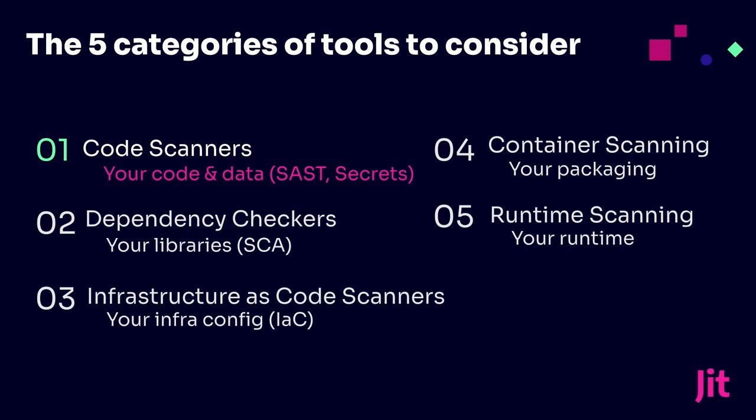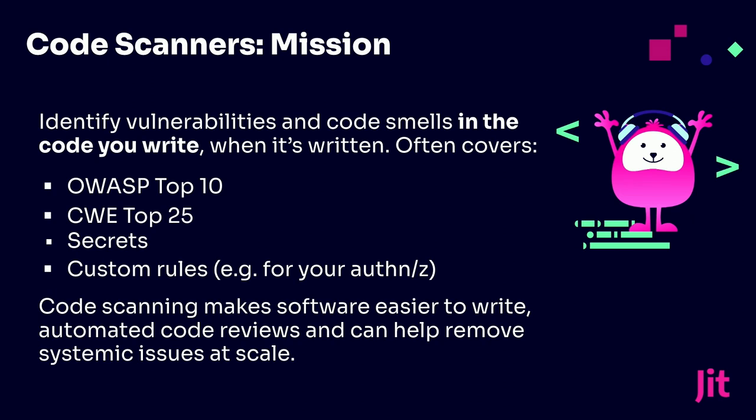Now let's go through each category, show the tools, and show what we picked. Starting with code scanners — what do we mean by that? Identifying vulnerabilities — code smells, issues with your code. These could cover the OWASP Top 10, the CWE Top 25, secrets that are out there, any custom rules you don't want within your code. These code scanners help you detect those issues while you're developing.